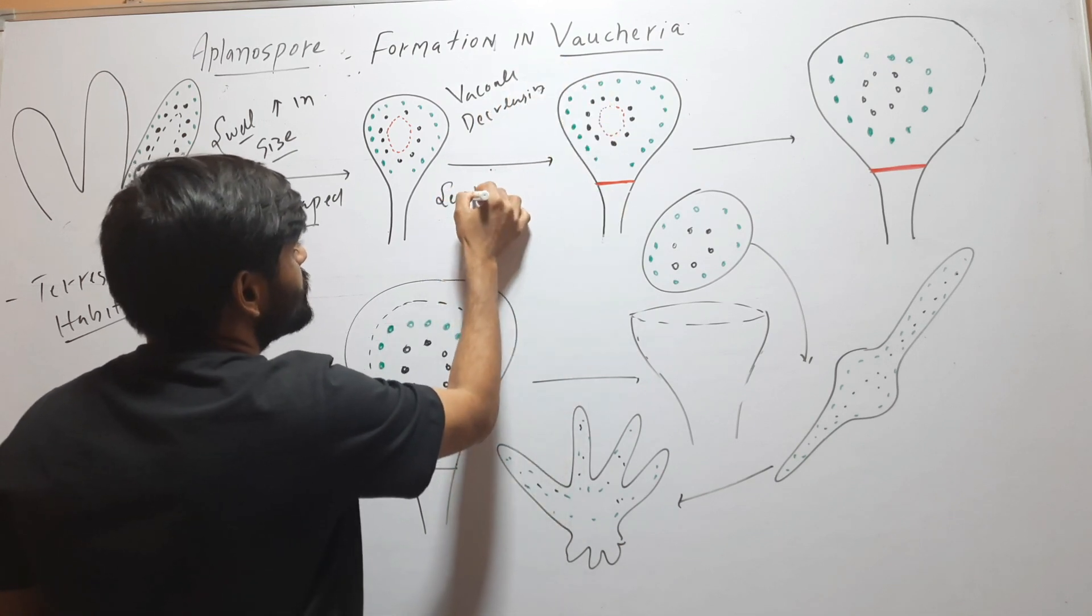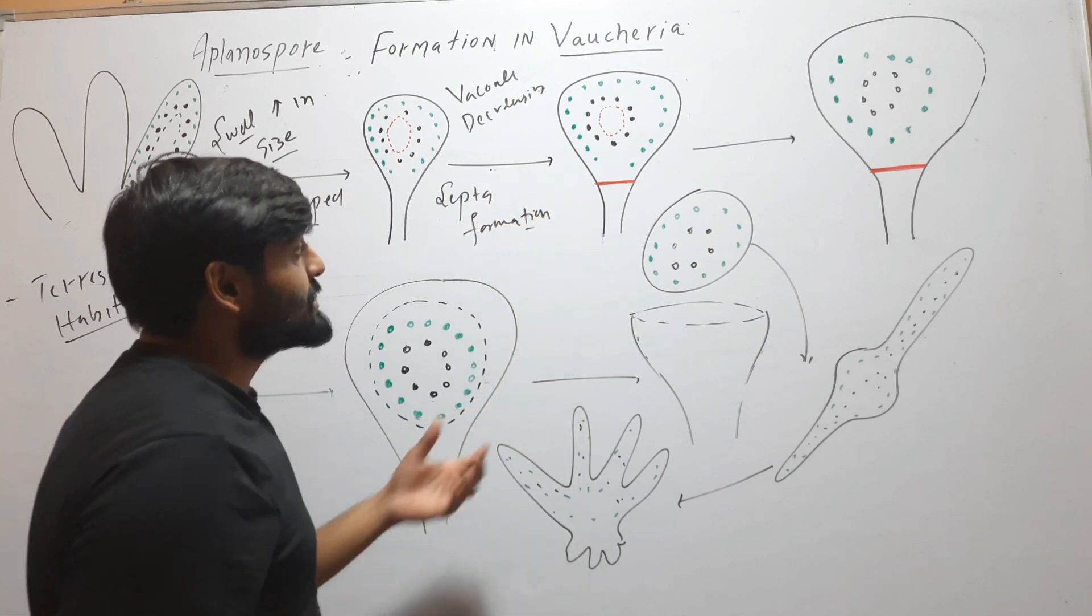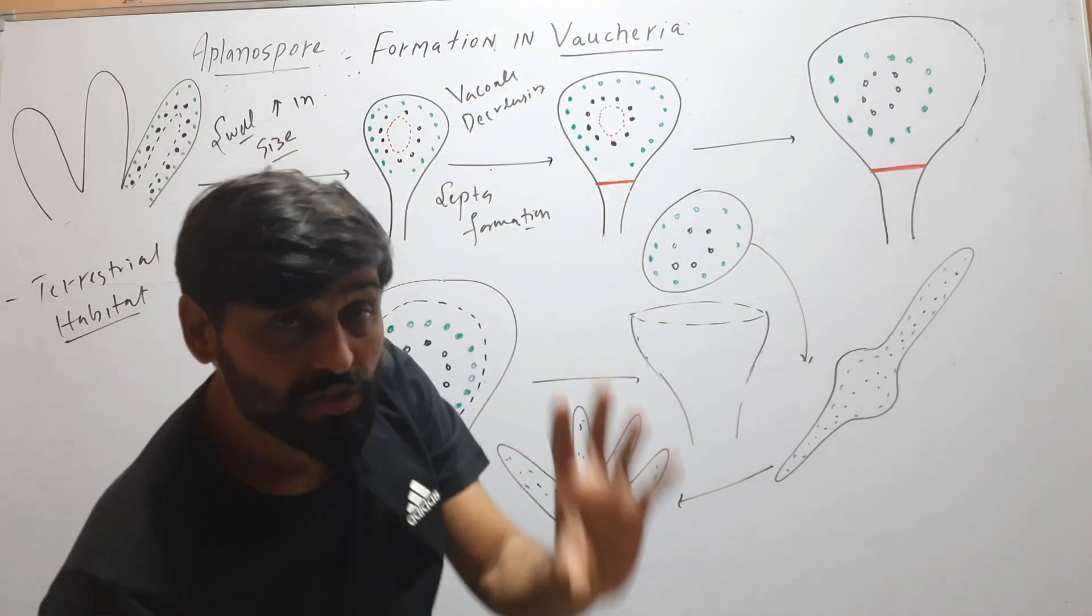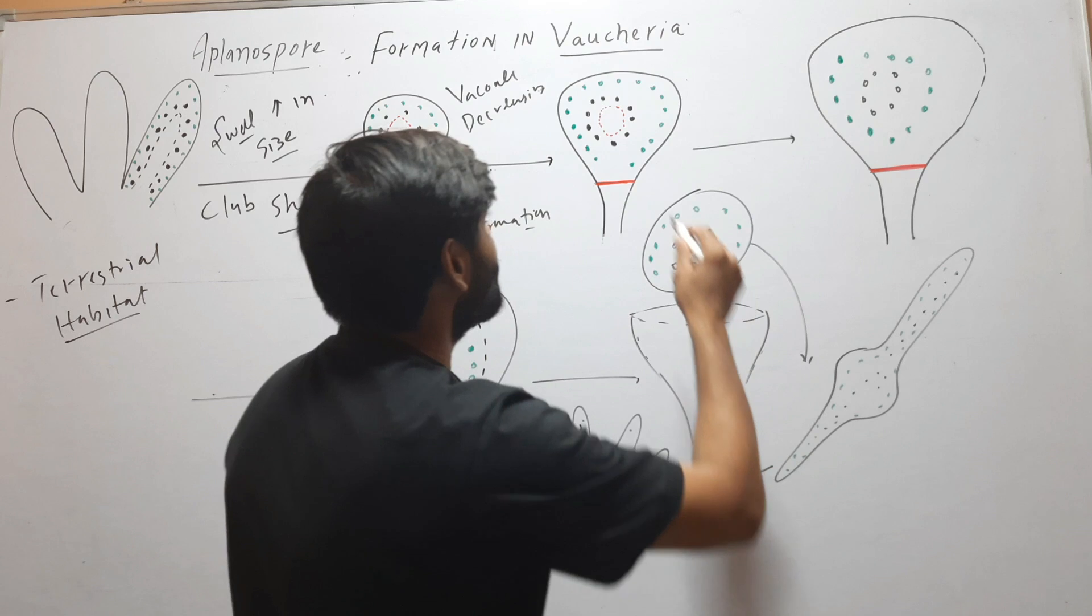Then its vacuole starts decreasing and there will be a septa formation which will separate this upper club-shaped filament from the rest of the filament.